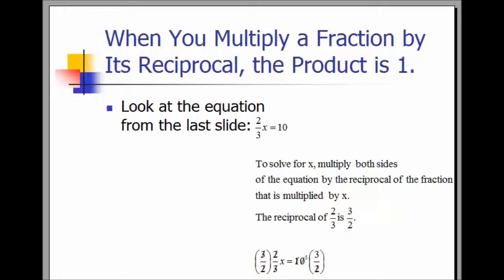Notice on the left of the equation, the three in the numerator of the three-halves cancels with the three in the denominator of the two-thirds, leaving one. The two in the numerator of the two-thirds cancels with the two in the denominator of the three-halves, leaving one. We're left with 1x equals 10 times three-halves, or x. And 10 times three-halves reduces to 15. Therefore, x equals 15.